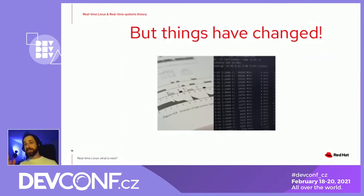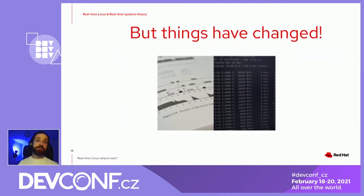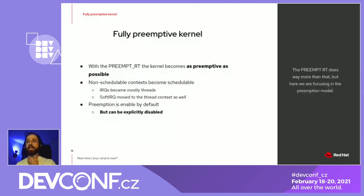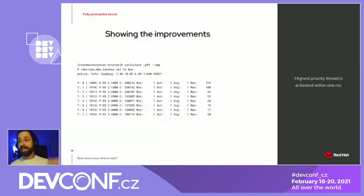Luckily, some things have changed in the recent past. Here is one example: preemption theory versus practice. With PREEMPT_RT, the kernel becomes more preemptive — as preemptive as possible. Everything becomes a task, preemption is enabled by default, and we have good results measured by cyclic test on user space, showing that scheduling latency is in this amount of microseconds.